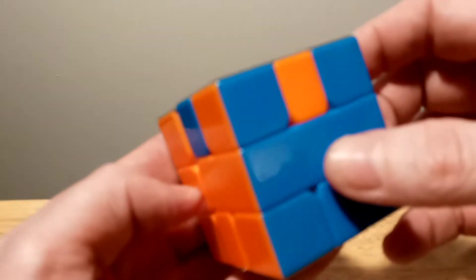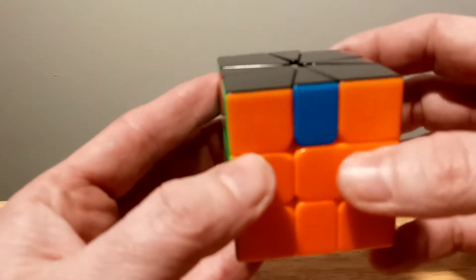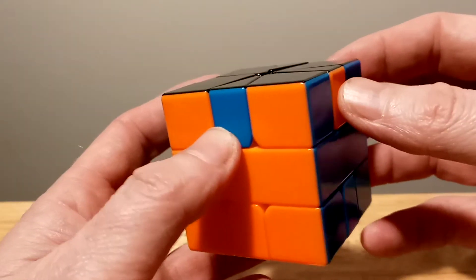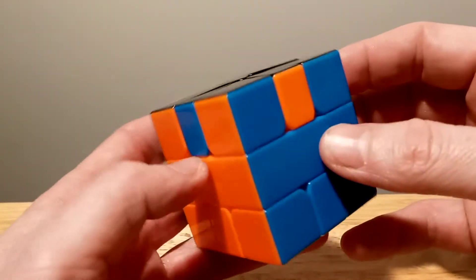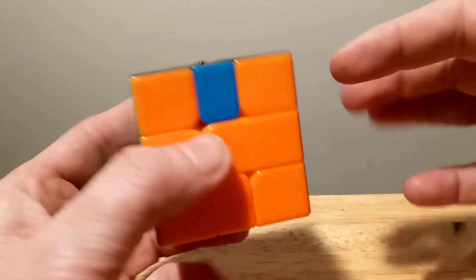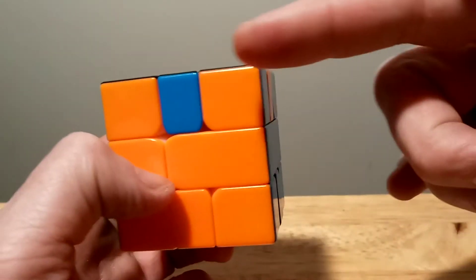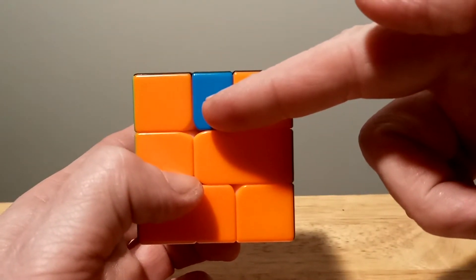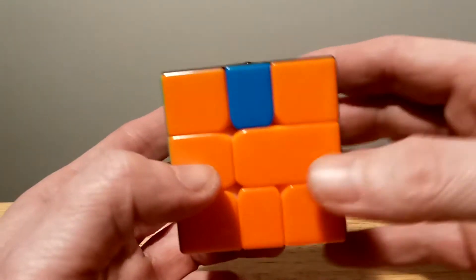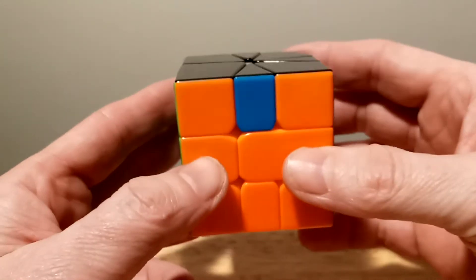So you use this slice here, but the thing is, with the Z-perm, I'm going to show you what happens if you have this here. It doesn't matter what color, but if it's this one and it's going to come here, and this one's going to come here, it won't work. And I'll show you what I mean.